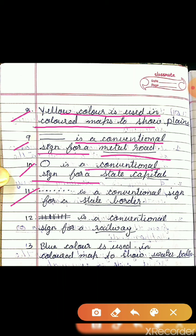Statement 11: This sign is a conventional sign for a blank — the answer is state border. Statement 12: Another sign is a conventional sign for blank — the answer is railway.